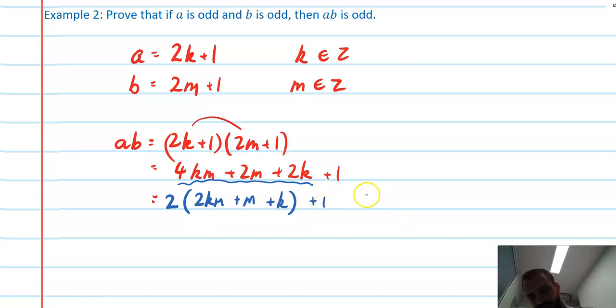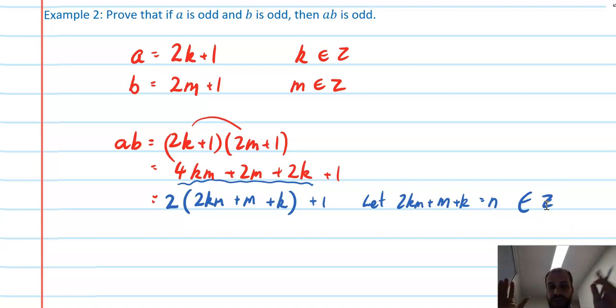Now if I let 2km + m + k equal n, and n is an integer, right? Because k and m are integers, and the only thing that could possibly happen when you multiply two integers together, multiply that by two, add an integer, add another integer, is you get an integer. We didn't prove that. That's self-evident. We have 2n + 1. That is odd. Therefore, ab is odd. There's our proof. You've seen the same technique twice here: being able to represent something as an odd number, and then being able to factorize it, and then sub in some known value as another integer, and same deal.